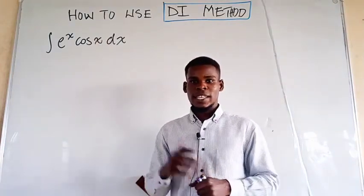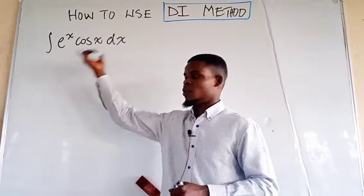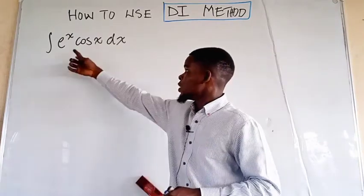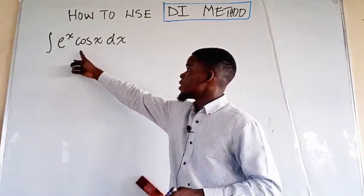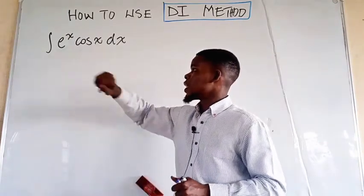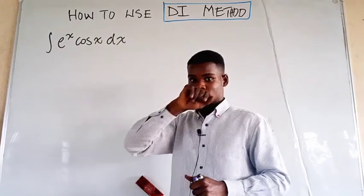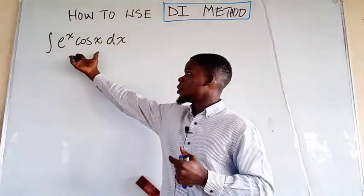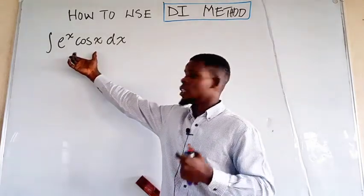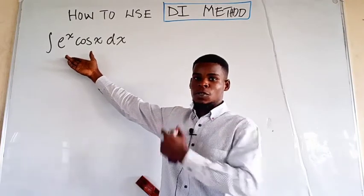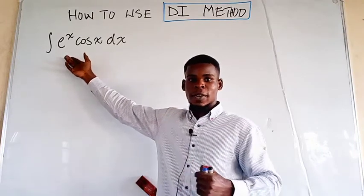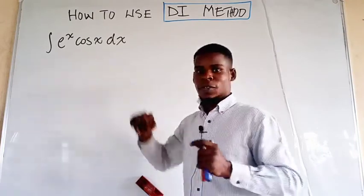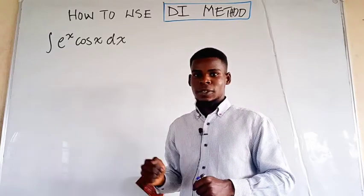We are here to find the antiderivative of this function, not actually the area. So e to the power x times the cosine of x dx. Normally we use integration by parts, which is what I'm going to do here, but I'm going to use a different version of it called the DI method.